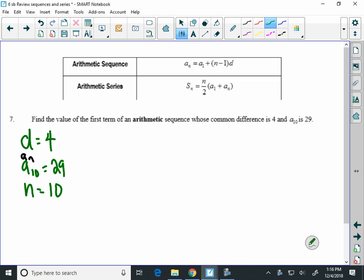And what I should have written down first is it says find the value of the first term. We need to figure out what that first term is. So once again we're going to use the top equation here and we're going to fill that in. The a sub n equals a sub 1 plus n minus 1 times d.